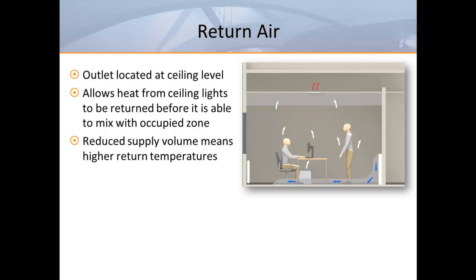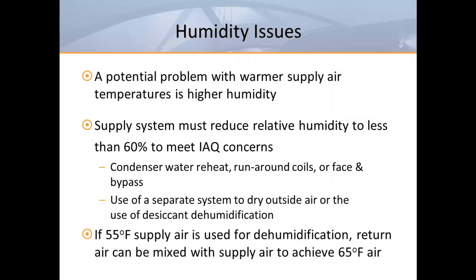In order for displacement ventilation to work most efficiently, the return air should be pulled from well above the occupied zone, preferably from the highest point in the room. Since much of the heat load from overhead lighting is captured above the occupied zone and supply temperatures are higher, you should expect higher return air temperatures than in a conventional mixed air system. To avoid potential humidity issues and air quality concerns, we need to limit relative humidity to 60% or less. There are many strategies we can employ at the air handler, or we might choose desiccant dehumidification. If we choose to drop our air temperatures to 55 degrees to wring the moisture out of the air, we can blend return air with the supply air to bring it back to 65 degrees.